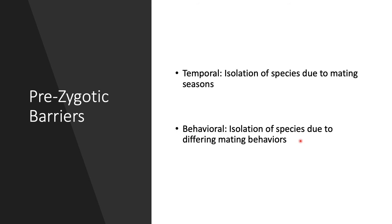We also have behavioral isolation, which is due to differing mating behaviors. Birds are a great example — certain species of birds can be incompatible with others because of their mating behaviors, like singing a different mating song or call. They can recognize that and realize that's not the bird they're trying to mate with.